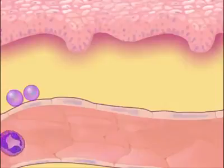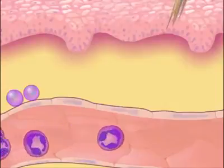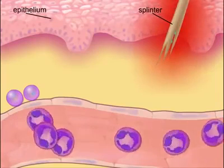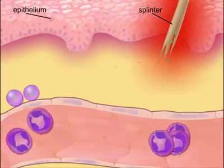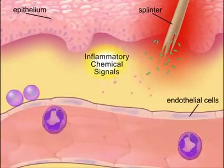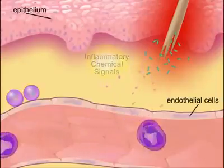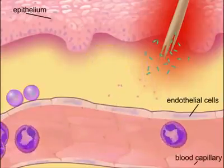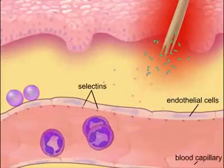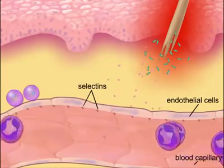Inflammatory response is an important, nonspecific defense against tissue damage. It begins when injured tissue cells release chemical signals that activate the endothelial cells of nearby capillaries. Within the capillaries, adhesion molecules called selectins are displayed on the activated endothelial cells.